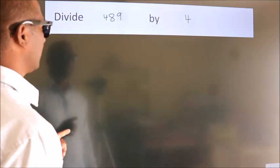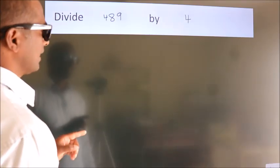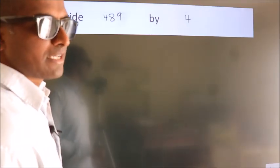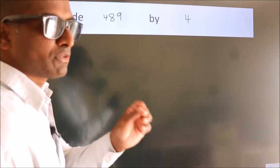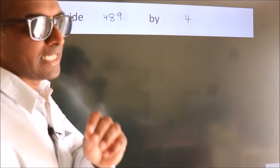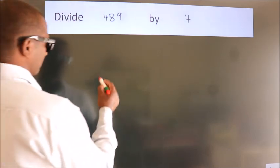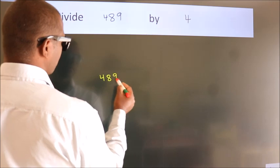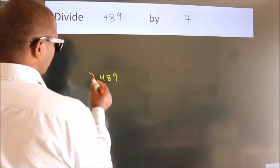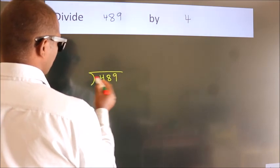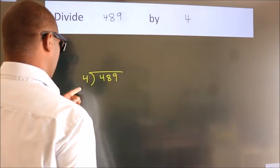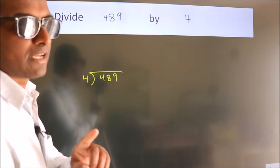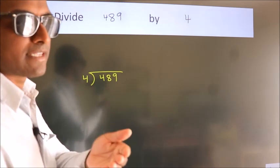Divide 489 by 4. To do this division, we should frame it in this way: 489 here, 4 here. This is your step 1.